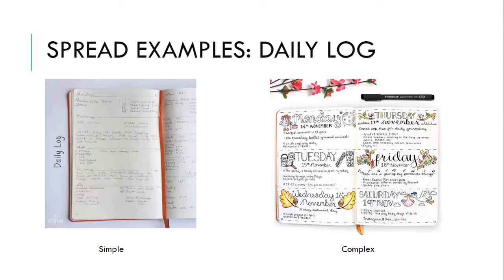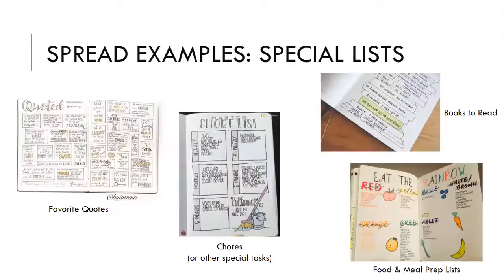Both of these daily logs are horizontal — all the rectangles for each day are horizontal. I will show you mine later. I like to use vertical spaces because I like to view my tasks chronologically from the beginning to the end of my day. Some special lists include: favorite quotes, chores, books to read, food and meal prep lists, movie lists, and house projects. There are a bunch of different ways to organize and keep track of things that are important to you.